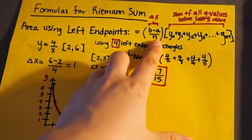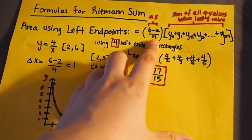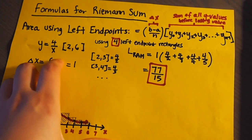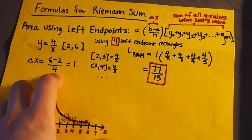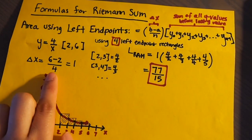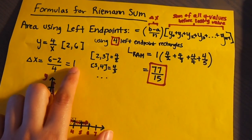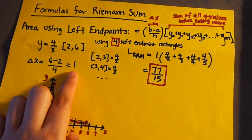So to find the delta x, what we're going to do is subtract the upper bound, which is 6, minus the lower bound, which is 2, all over the amount of rectangles that we want. And in this case, we want 4. So 6 minus 2 is 4 over 4. So you'll find that delta x equals 1.